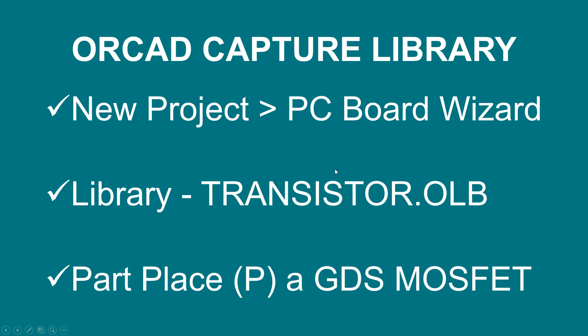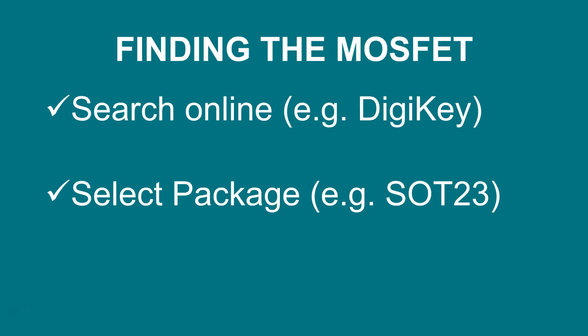Go to OrCAD Capture CIS library to create a new project and choose the PCB board wizard. The library you would select is transistor.olb and any other libraries you want — typically analog.olb as well, but definitely transistor. Then place a part using the P command; I chose a GDS gate-drain-source MOSFET, but you can choose any type you want.